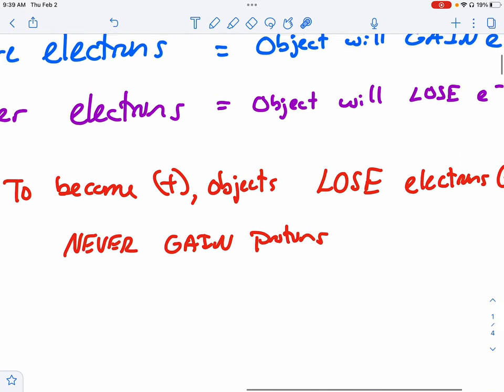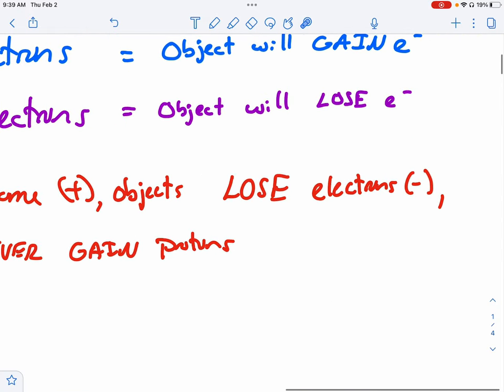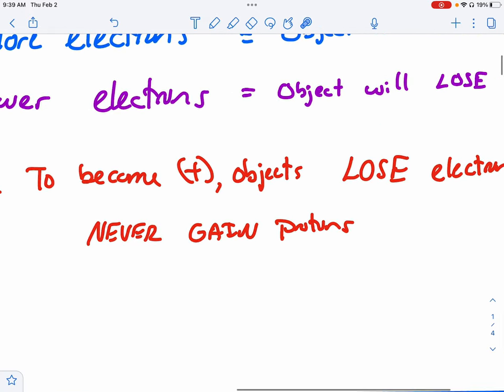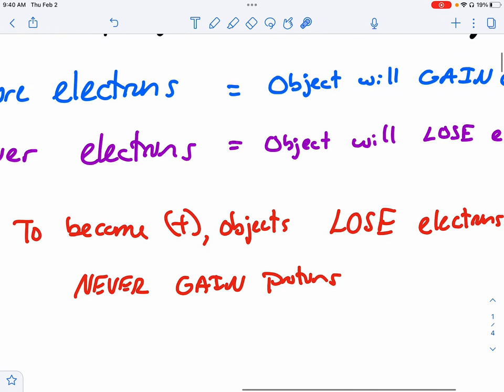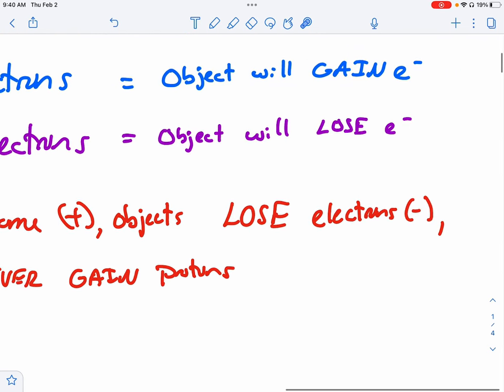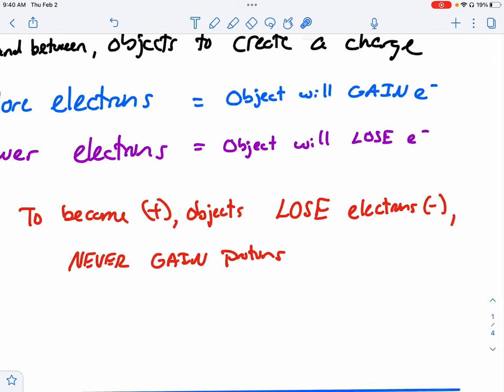Big note: To become positive, objects lose electrons. They never, ever gain protons. Okay, so please remember, to become positive, the object will have to lose electrons. Alright, very good.